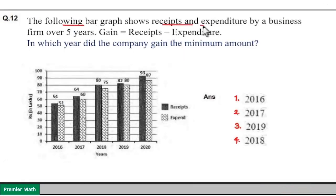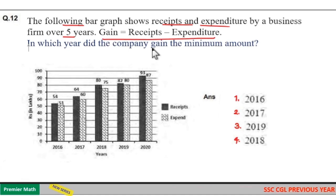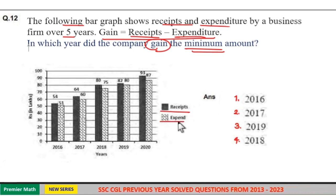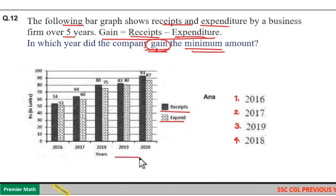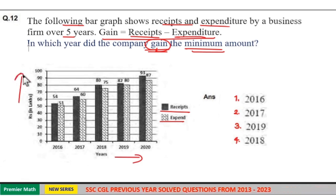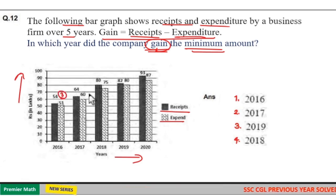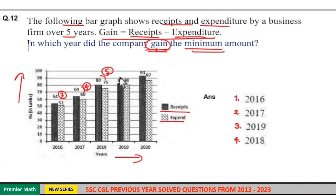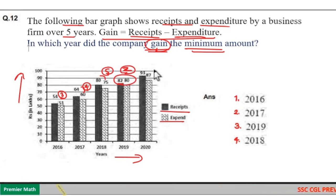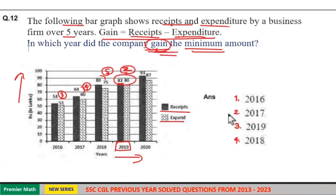The bar graph shows receipts and expenditure of a business firm over 5 years. Gain equals receipts minus expenditure. To find the minimum gain, take the minimum difference between receipts and expenditure. The differences are: 3, 4, 5, and 82 minus 80 equals 2, and 93 minus 87 is larger. The minimum difference is 2, occurring in 2019. So option 3 is your answer.